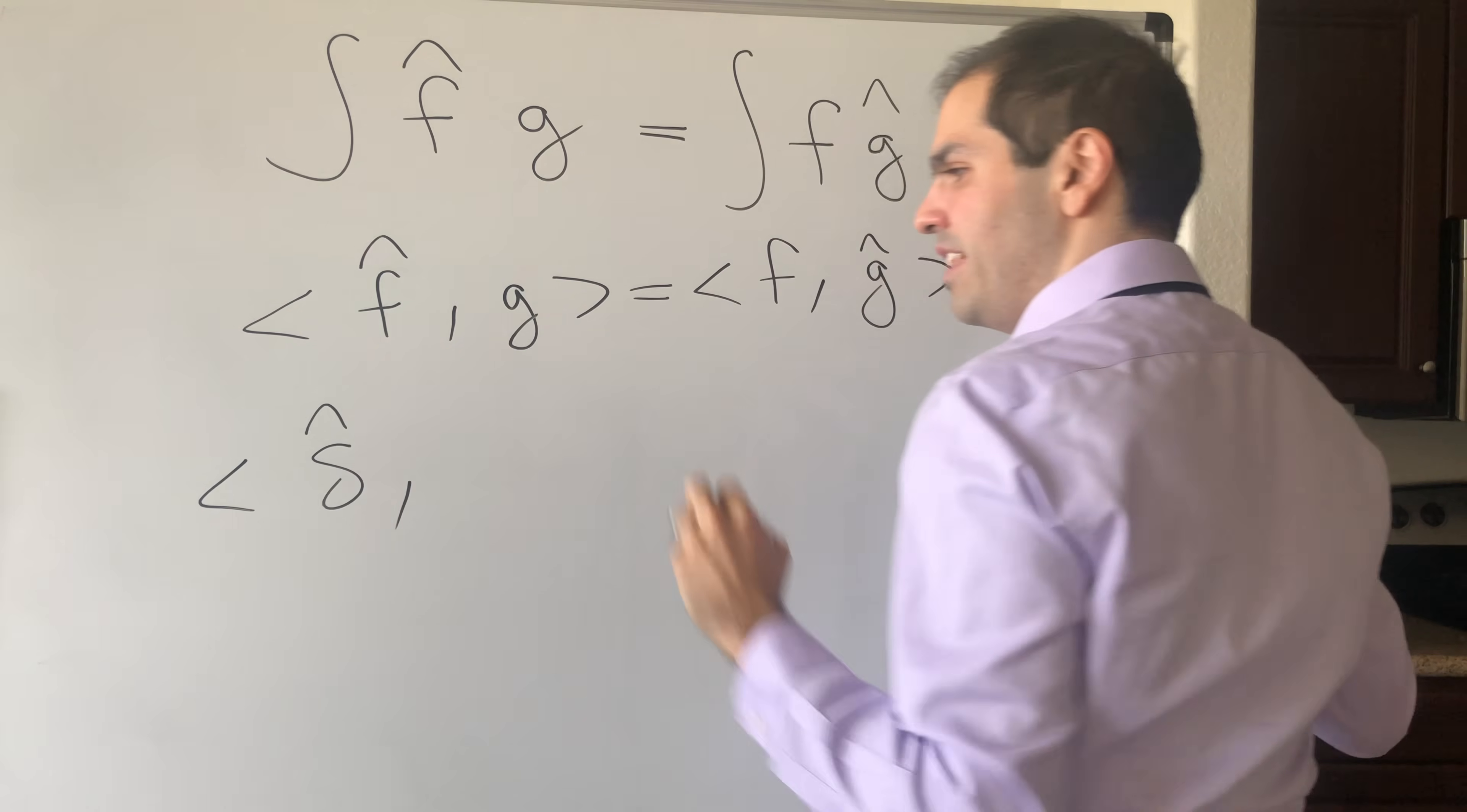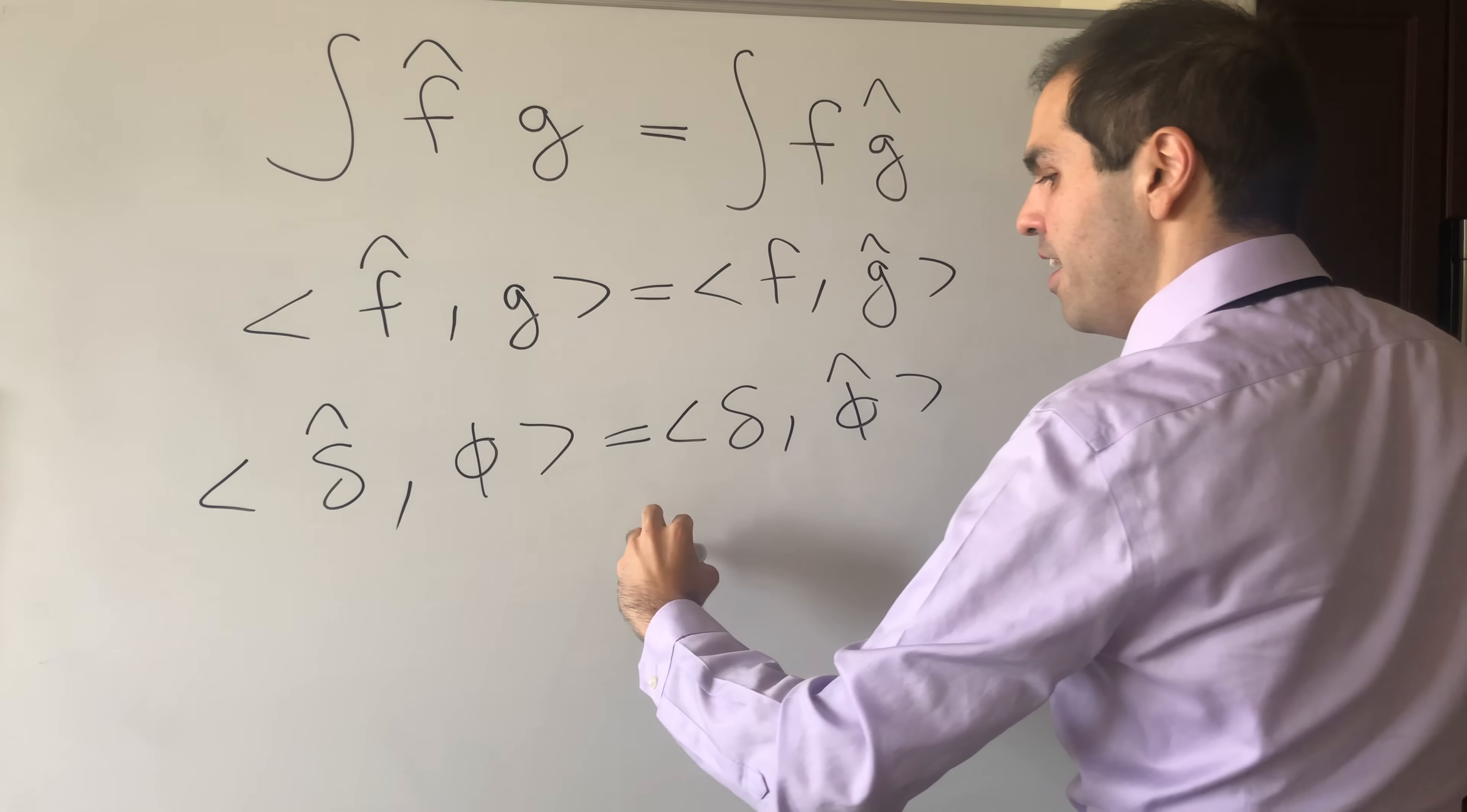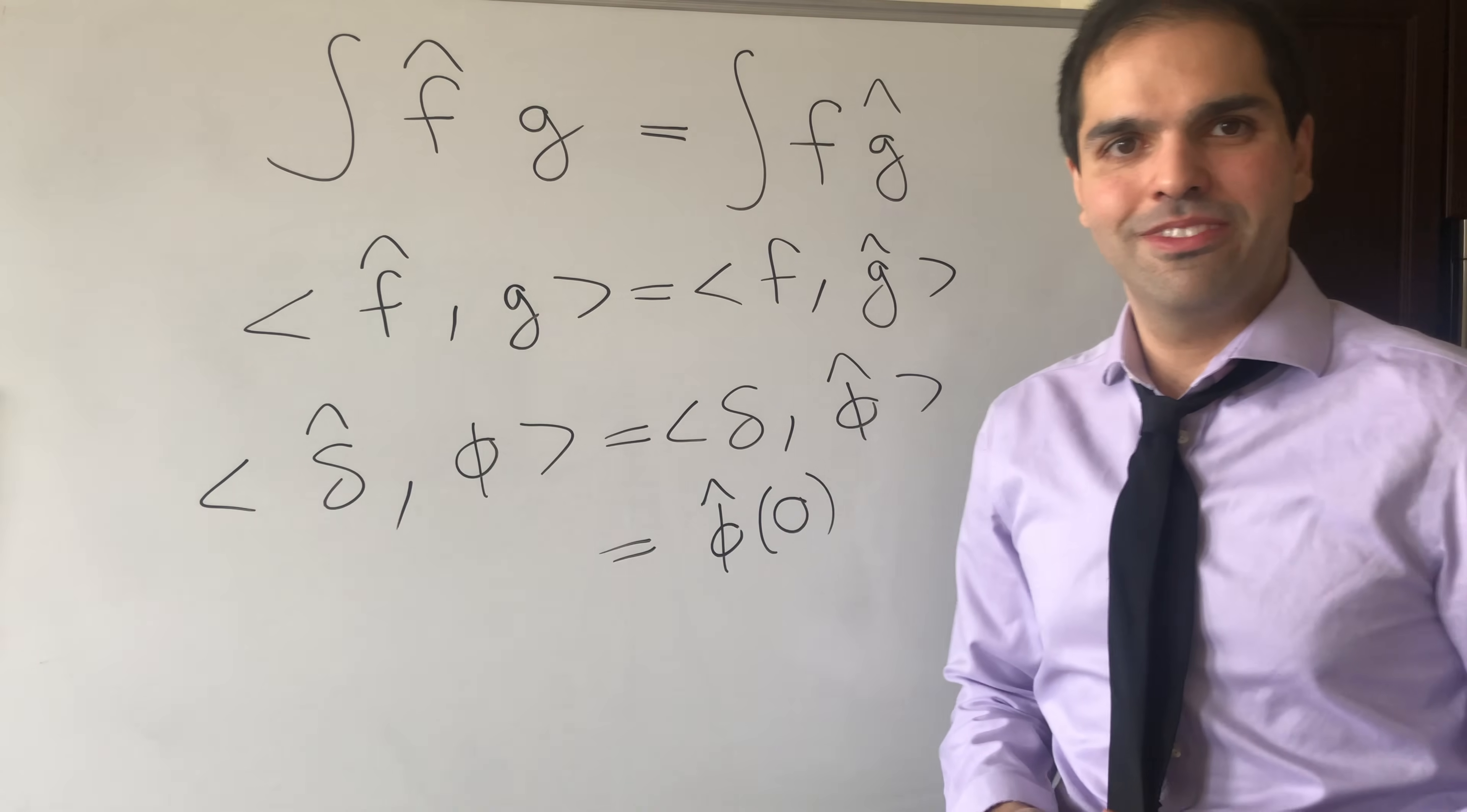So delta hat applied to functions phi is just delta applied to the Fourier transform of phi. And remember what the Dirac delta does: it just evaluates functions at zero, so this becomes the Fourier transform of phi applied to zero, which again makes sense. It just takes this function and evaluates it at zero but in the Fourier transform sense.